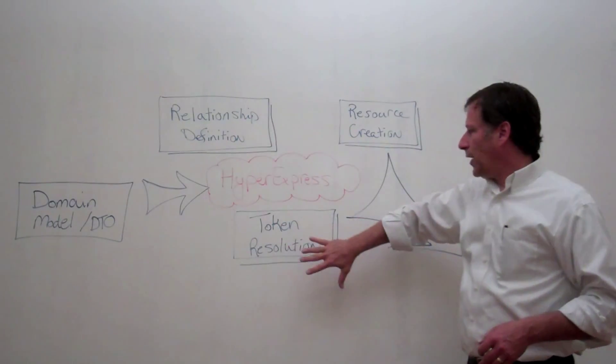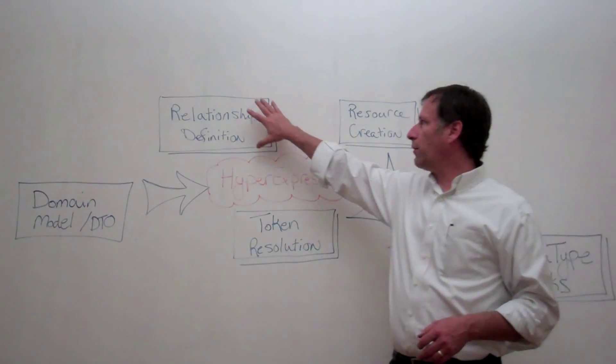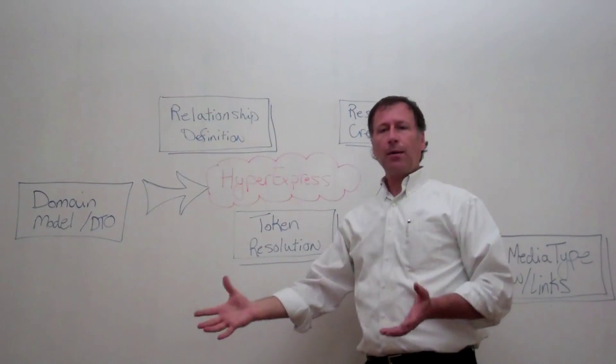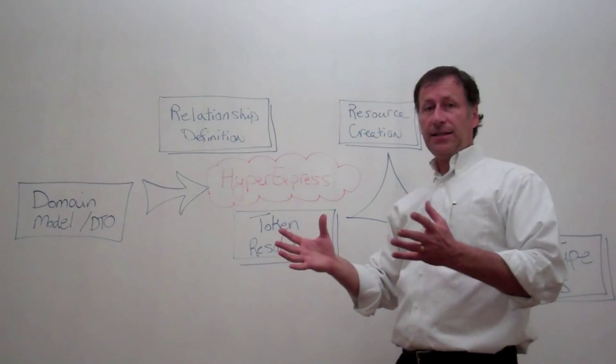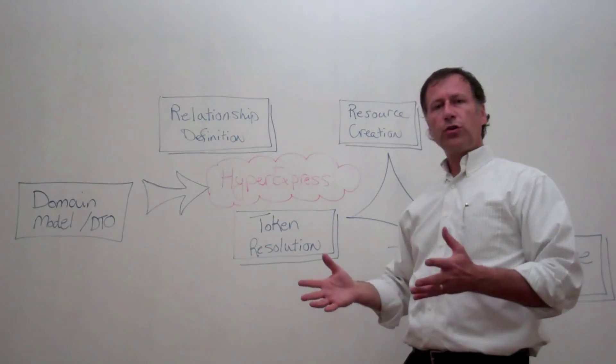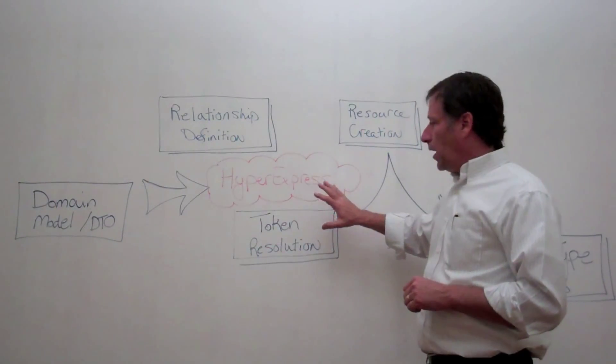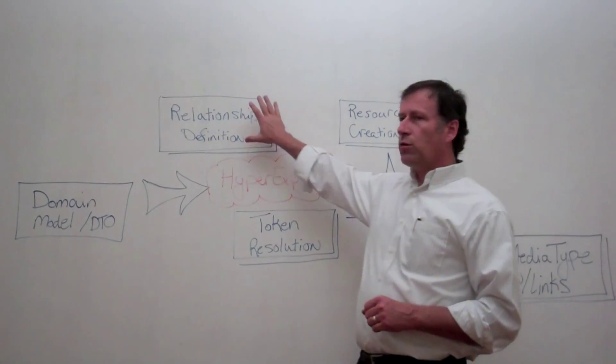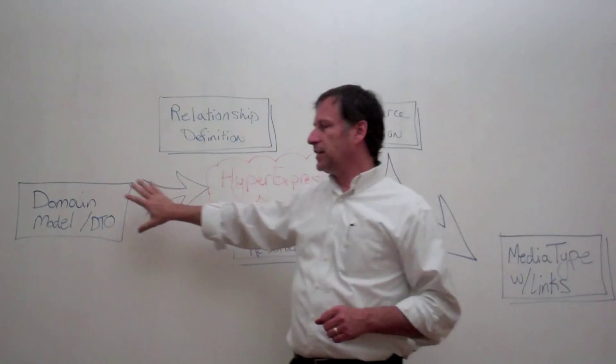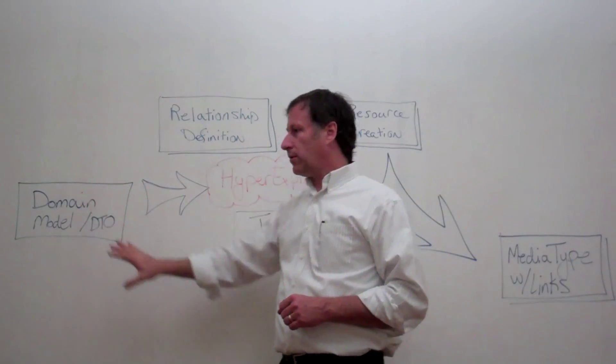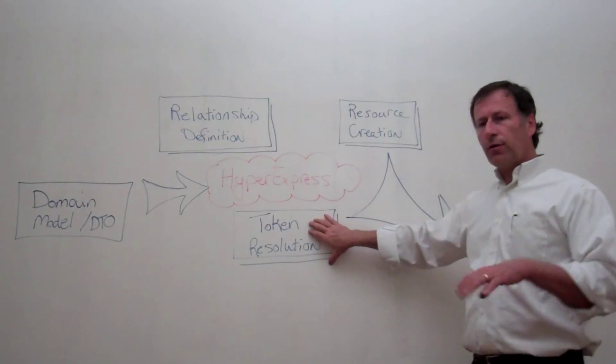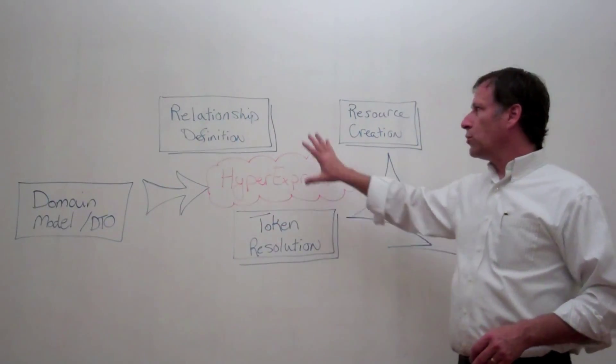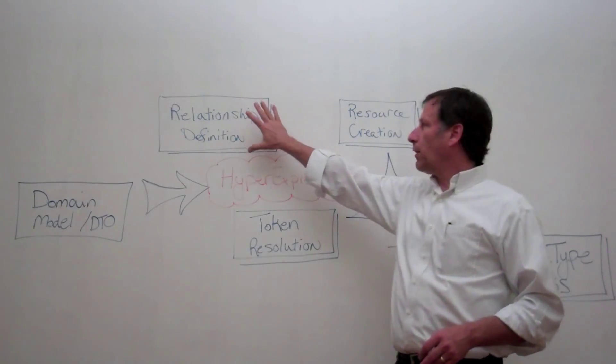It also has the idea of token resolution because the URLs in the relationship definition will most likely be templates where you have identifiers in your URL. And we need to resolve those identifiers in the template URLs using data from the domain model. So there's a token resolver where we can bind data from the domain to identifiers in the URL.